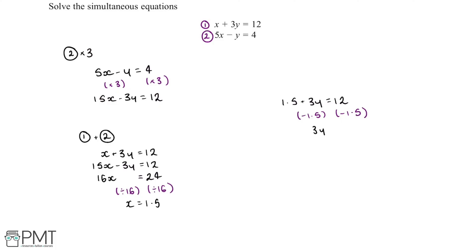this tells us that 3y is equal to 10.5, and the final thing we can do is divide both sides by 3. And this tells us that y is equal to 3.5.